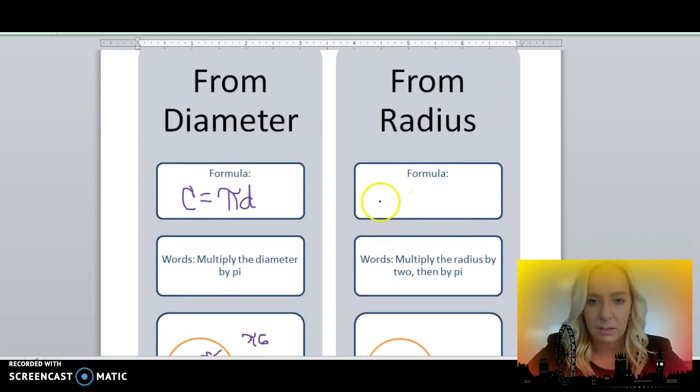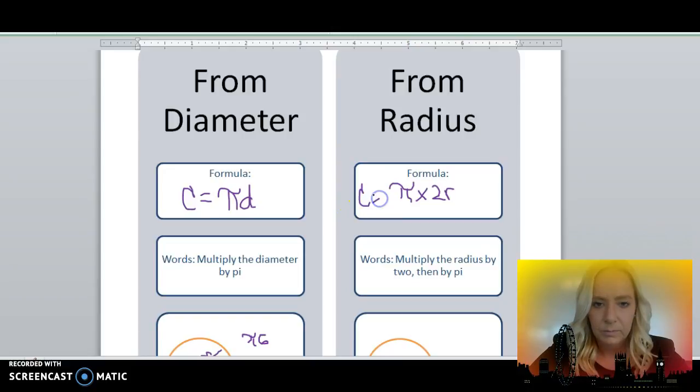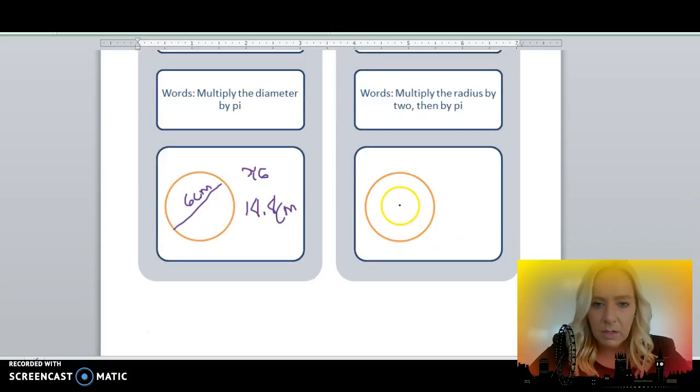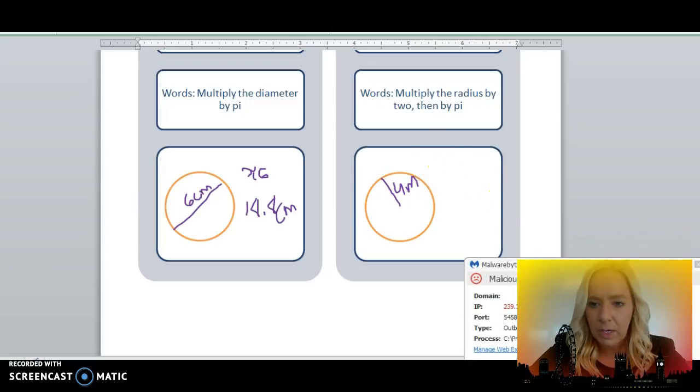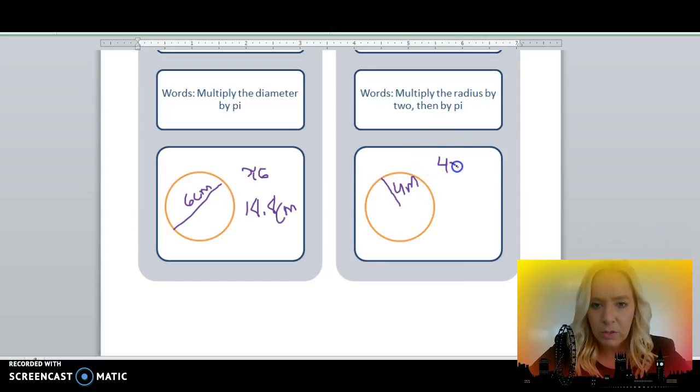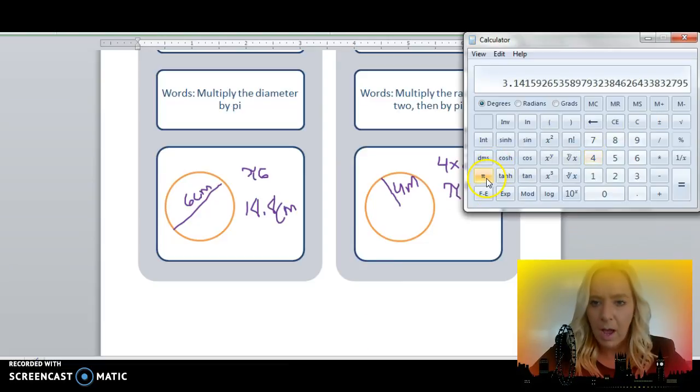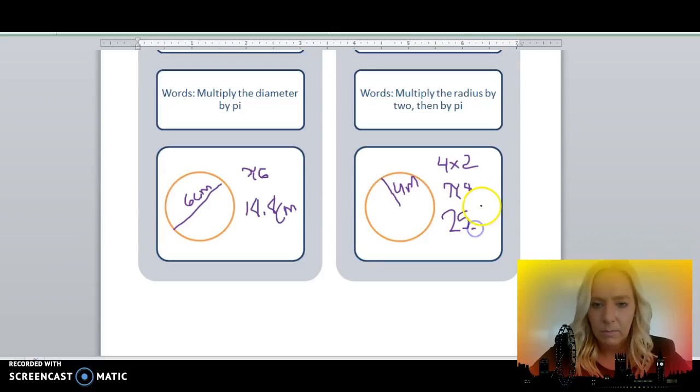If you're given a radius, what you'll have to do is take pi times 2r, which is 2 times the radius, because 2 times the radius is equal to the diameter. Let's create a radius of 4 meters. We're going to have to take 4 times 2 first, which is 8, and then we can take pi times 8. Pi times 8 is equal to 25.1 meters.